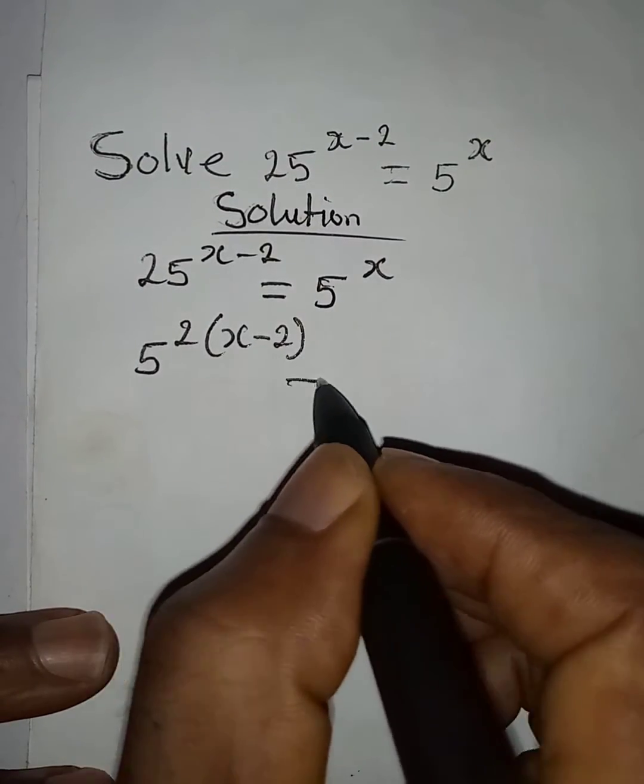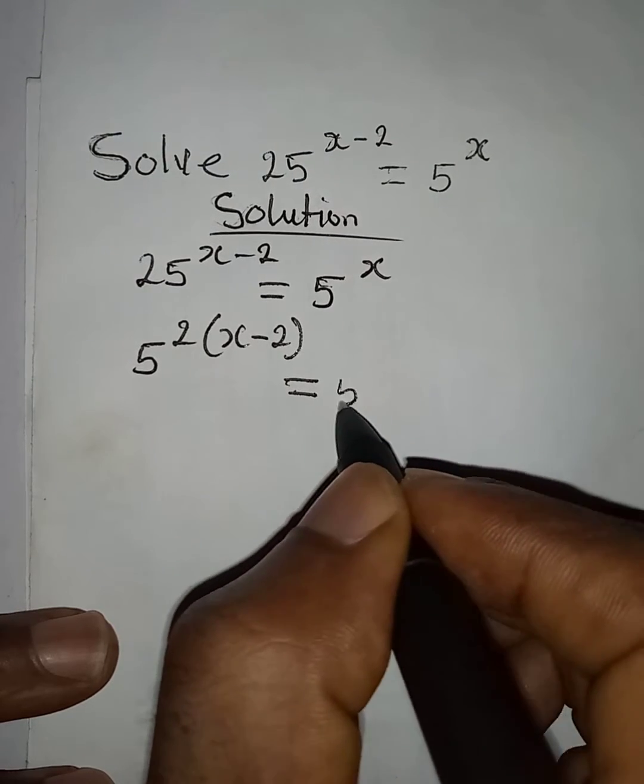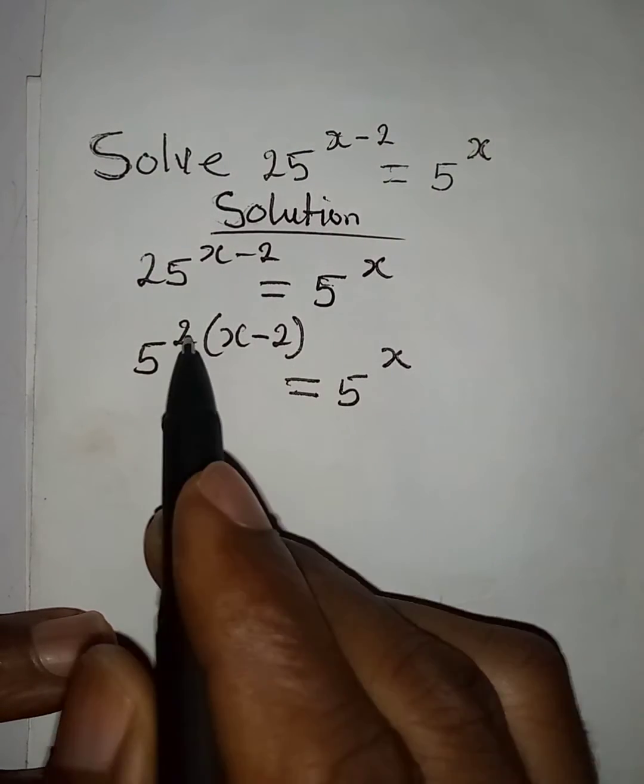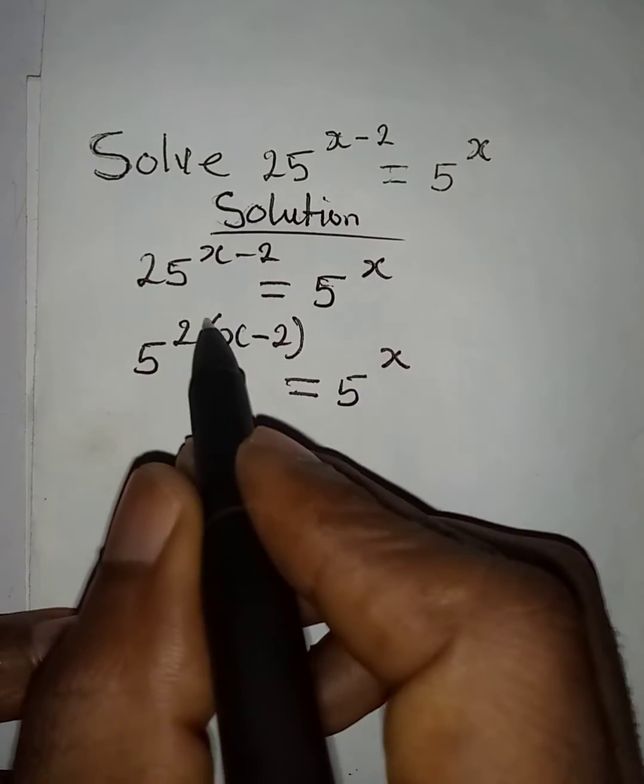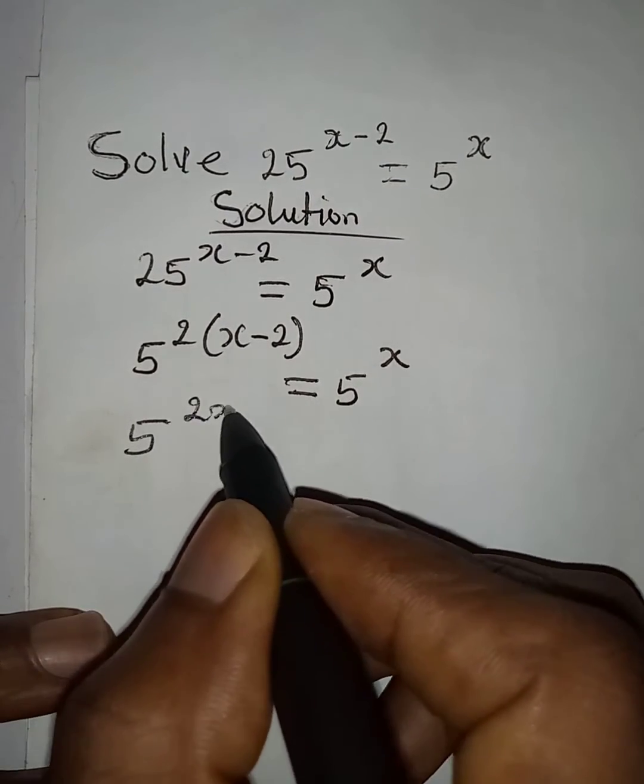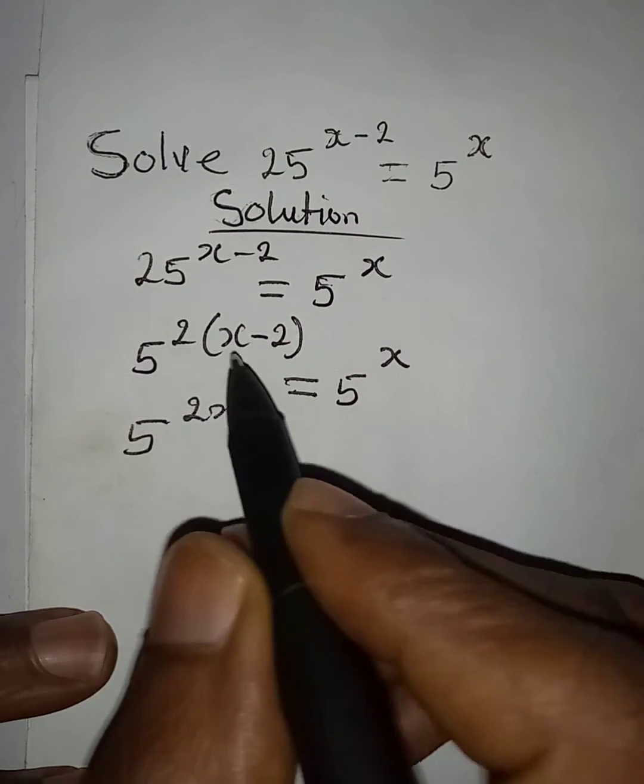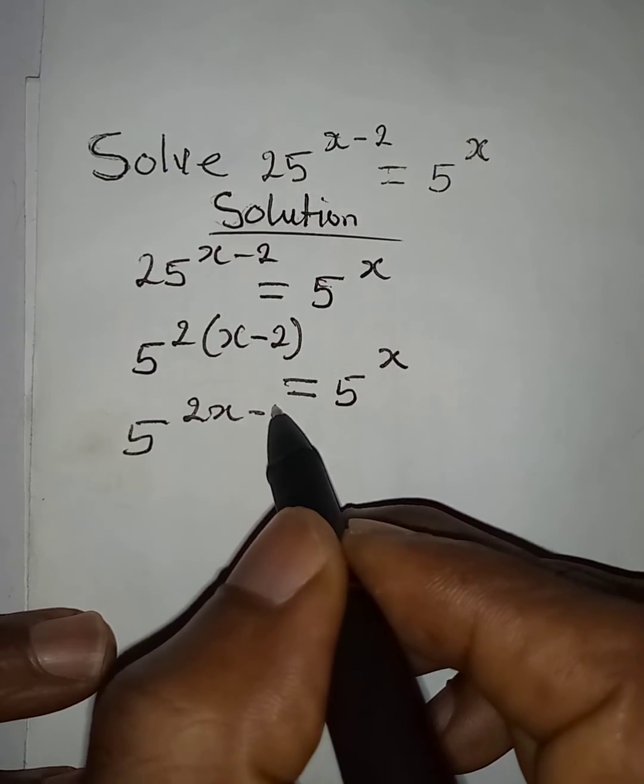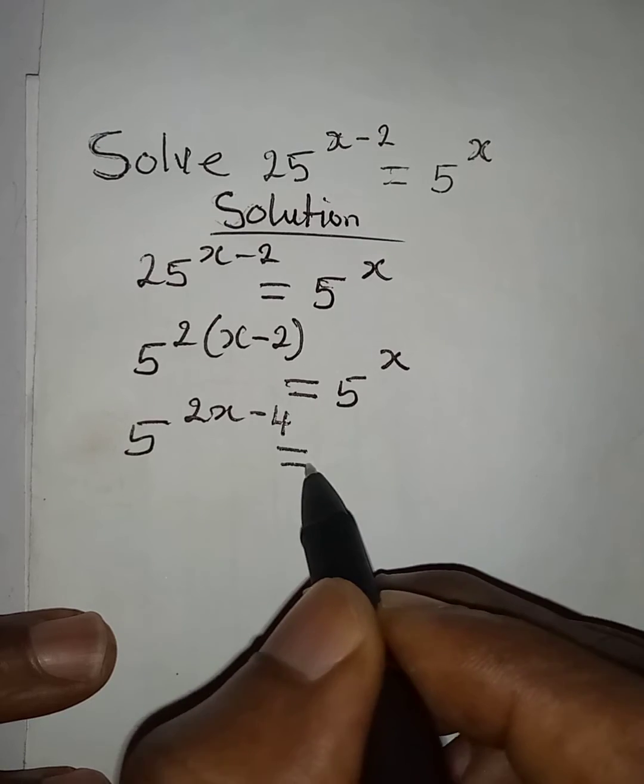This is equal to 5 to the power of x. Now let us open this bracket so that we have 5 to the power of 2x minus 4, and this is equal to 5 to the power of x.